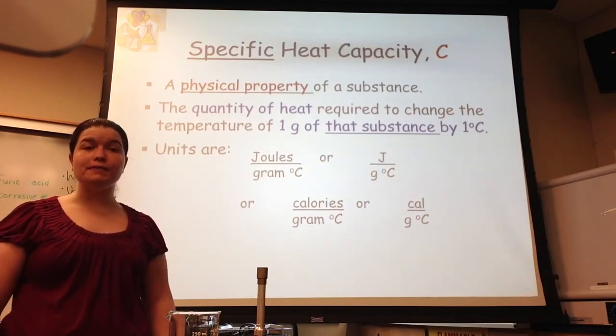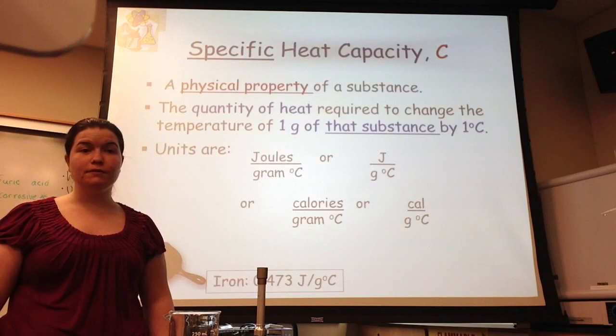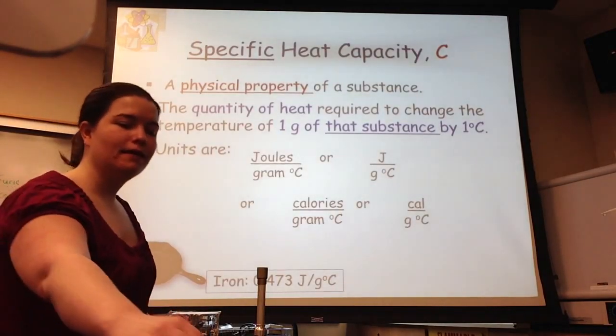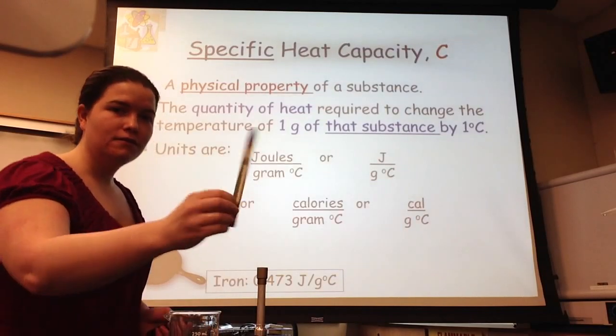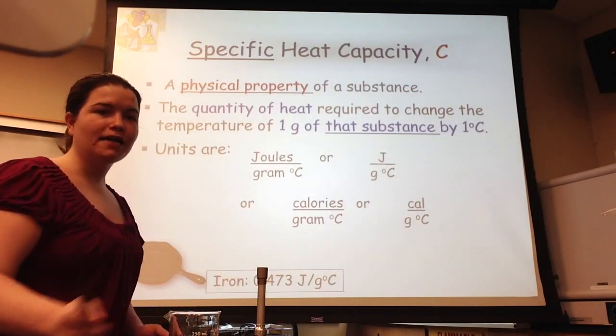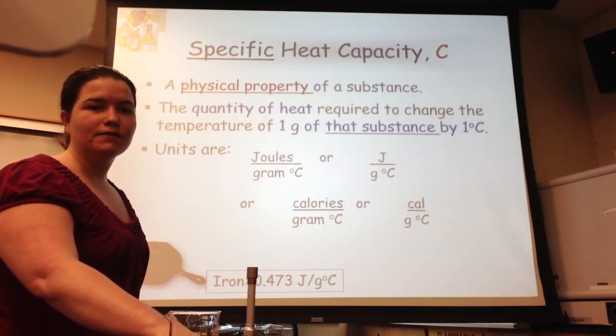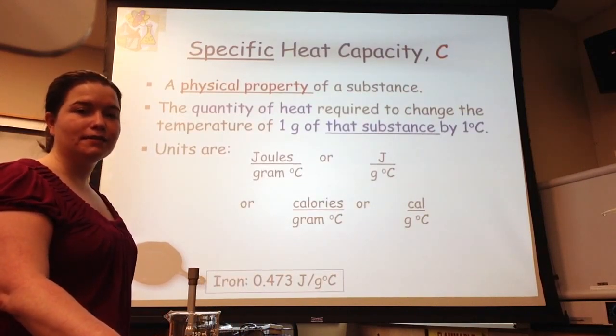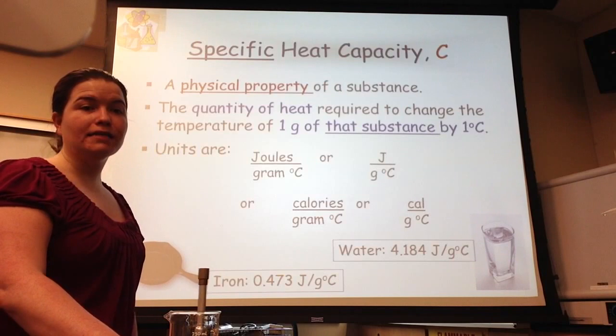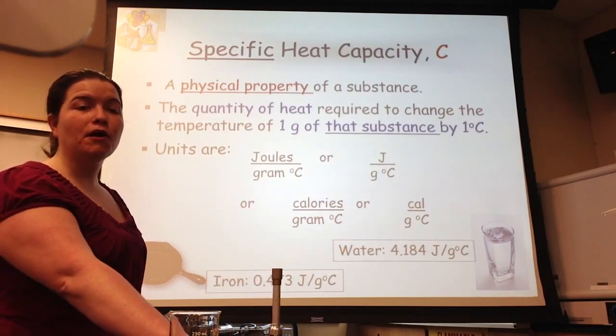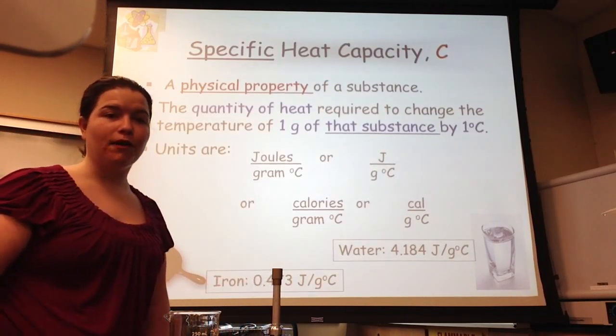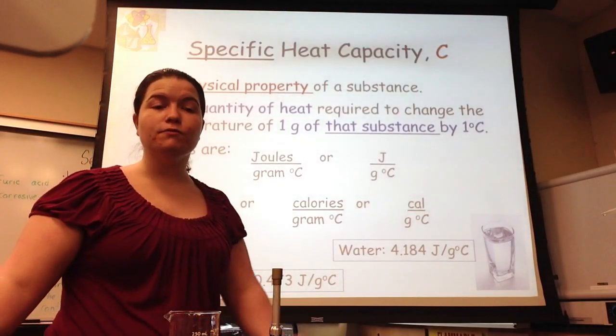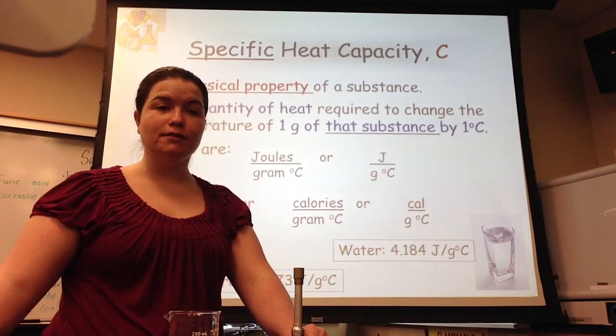We're going to talk about two different substances and their specific heat capacity. Iron, like this iron pan, or like the spatula from our laboratory, has a specific heat capacity of 0.473 joules per gram degree Celsius. Water, on the other hand, has a higher specific heat capacity of 4.184 joules per gram degree Celsius. This means that more heat energy is required to raise one gram of water one degree Celsius.